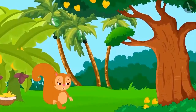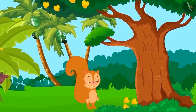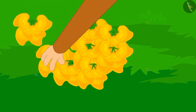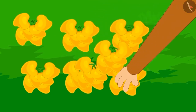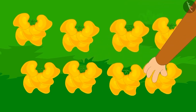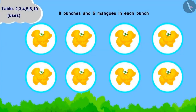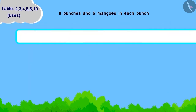Chanda filled twelve bananas in a basket and she started walking in her garden. Chanda collected a lot of mangoes from her mango tree and tied them in bunches of six mangoes each. Can you tell how many mangoes has Chanda collected in total? Chanda has got eight bunches and every bunch has six mangoes in it. How will we write this? Eight times six.